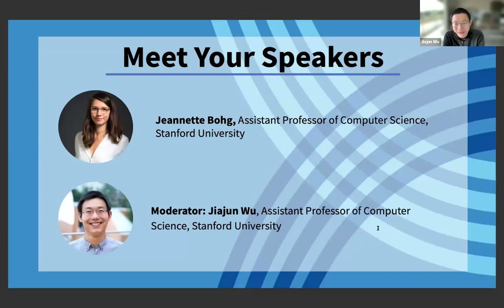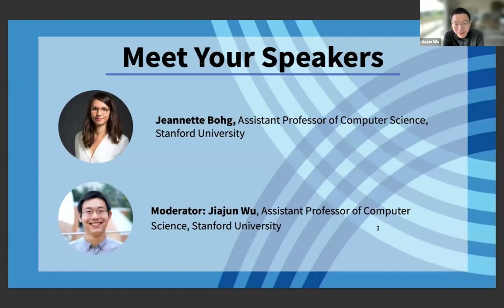Her research explores two questions: what are the underlying principles of robot sensor-motor coordination in humans, and how can we implement them on robots? Research on this topic is necessarily at the intersection of robotics, machinery, and computer vision. Her lab is especially interested in robot grasping and manipulation.